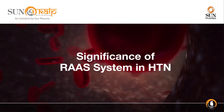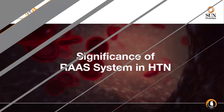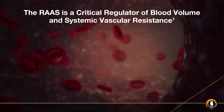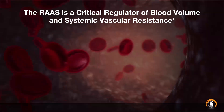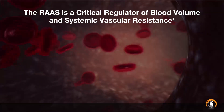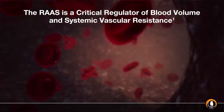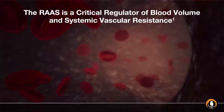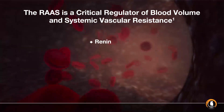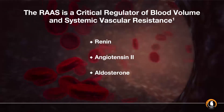Significance of RAS system in hypertension. The RAS is a critical regulator of blood volume and systemic vascular resistance. Its three major components are renin, angiotensin 2, and aldosterone.